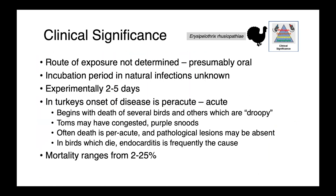In turkeys, the route of exposure to Erysipelothrix has not been determined, although presumably it's oral, just like in pigs. The incubation period of natural infections is unknown, although experimentally disease has been reproduced after two to five days. The onset of disease is oftentimes peracute to acute — it happens very, very quickly.